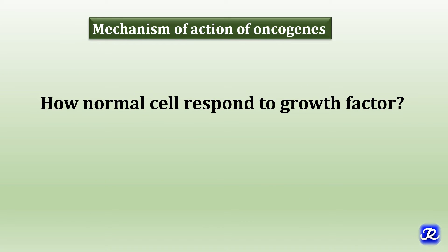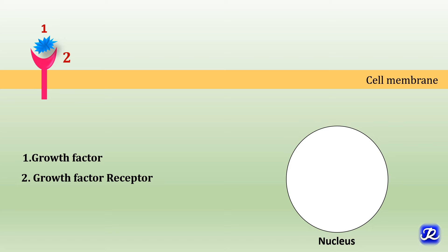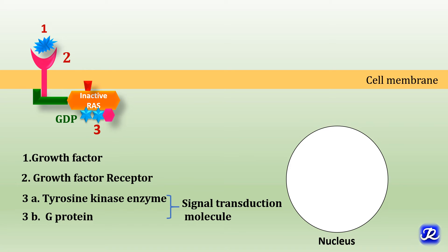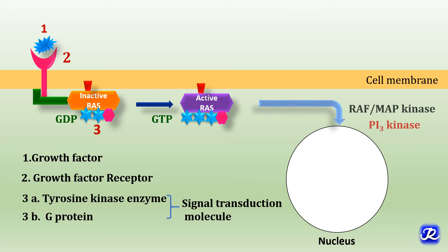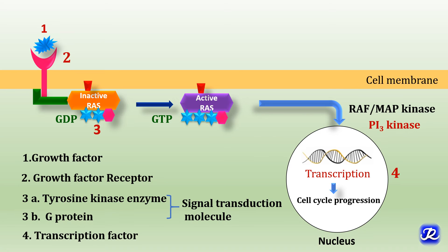Now let's study the mechanism of action of oncogenes, for which we need to understand how a normal cell responds to growth factors. When a growth factor interacts with its receptor, it activates a binding protein such as a tyrosine kinase enzyme, and the inactive RAS associated with the cell membrane becomes activated. This activated RAS then activates the MAP kinase pathway or PI3 kinase pathway, leading to transcription of genes involved in cell cycle progression. Oncoproteins can affect this cell signaling pathway at any level — at growth factors, receptors, signal transduction, or transcription factors.